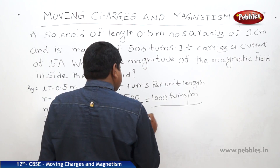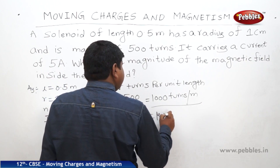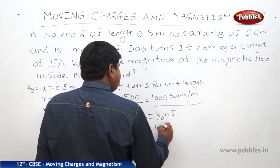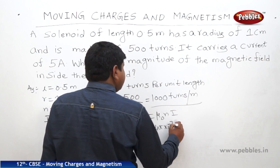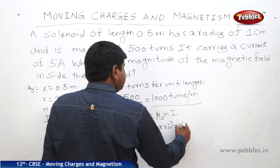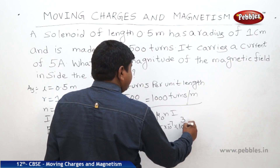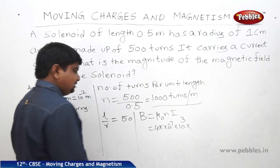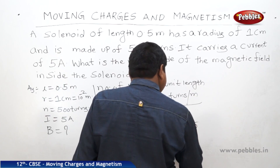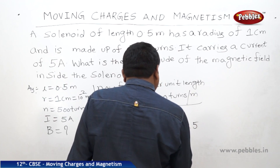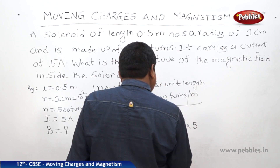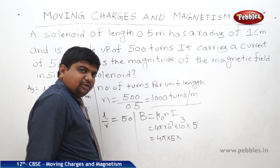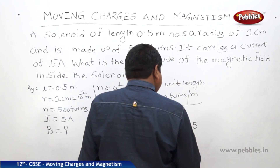Therefore B equals μ₀NI, where μ₀ equals 4π × 10⁻⁷, N equals 1000 (which we can write as 10³), and I equals 5 amperes. So we compute: 4π × 5 × 10³ × 10⁻⁷, giving 10 to the power of minus 4.